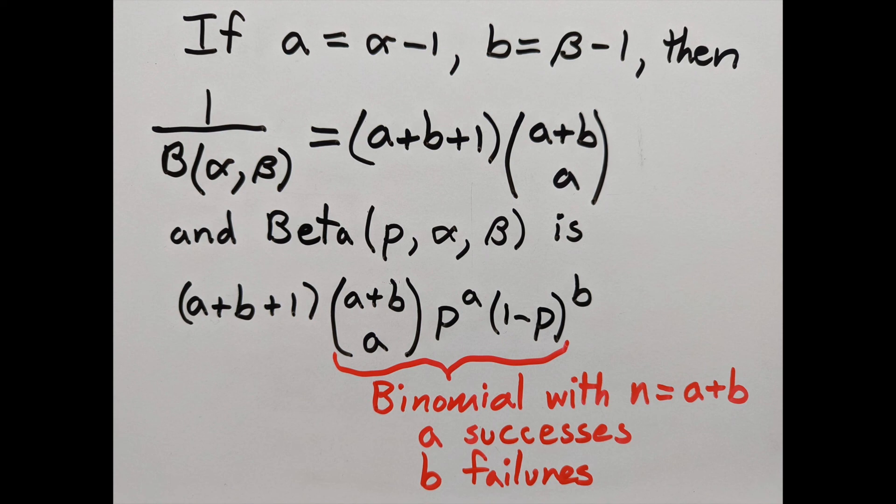Without that factor in front, you have a discrete probability distribution where p is known, and you're finding the probability of getting a successes and b failures.